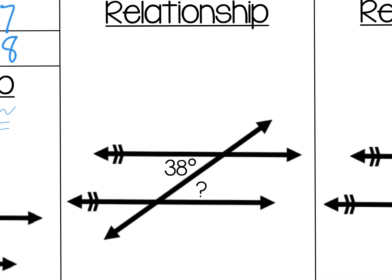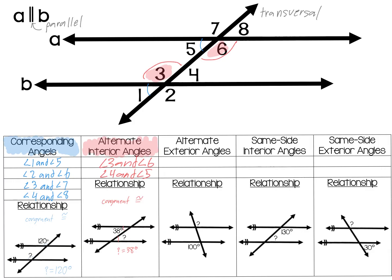Now let's look at the relationship between alternate interior angles. Notice how both the 38 degrees and the mystery angle are the acute angle on the line. Therefore, they're actually going to be congruent — they are going to have the same angle measure. So the mystery angle is 38 degrees.